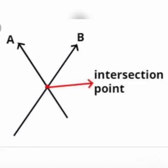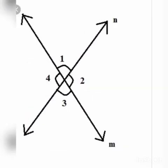Next, intersecting lines. When two lines meet at a point, that point is called the intersecting point. The two lines that meet at a point are called intersecting lines. When two lines intersect, they create angles at the point of intersection.